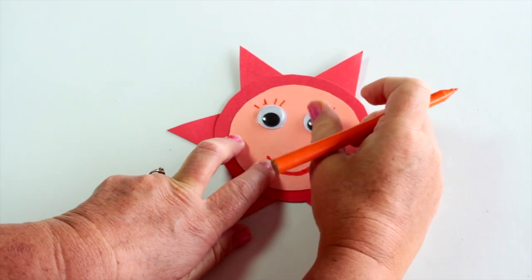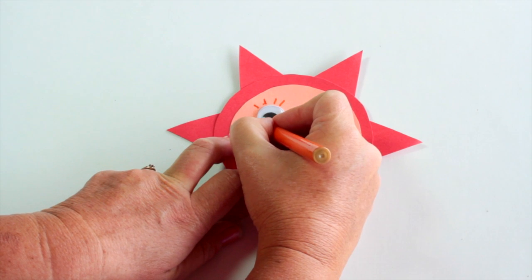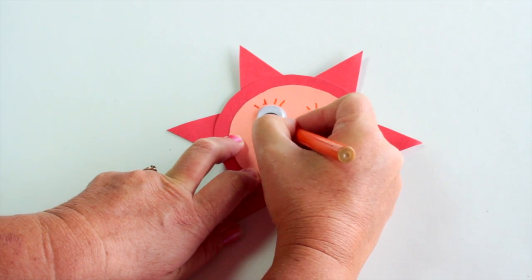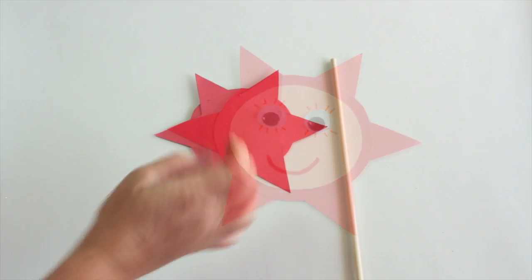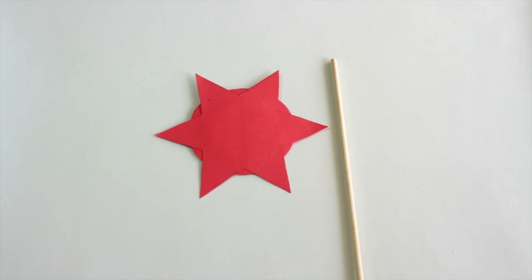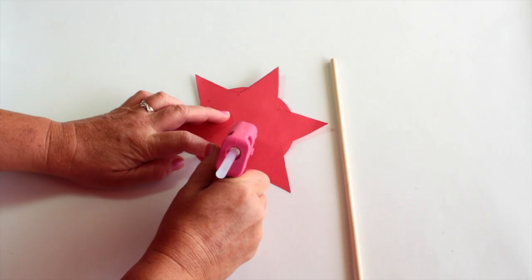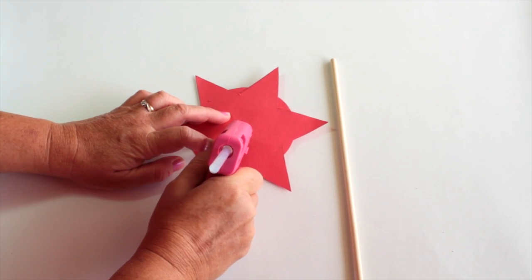Now add pink eyelashes around the googly eyes. With a hot glue gun, add a dab of glue and stick the dowel to the back of the star. Hold until the glue is set.